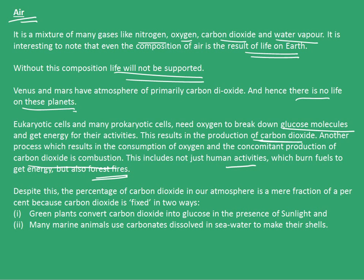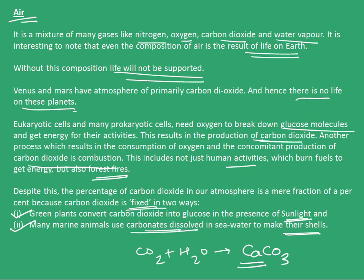Despite this, the percentage of carbon dioxide in our atmosphere is a mere fraction of a percent because CO2 is fixed in two ways. First, green plants convert carbon dioxide into glucose in the presence of sunlight. Second, many marine animals use carbonates dissolved in seawater to make their shells. These carbonates are essentially CO2 plus H2O forming CaCO3 — for example, calcium carbonate. So the CO3 component present in water comes from the reaction of CO2 and H2O.